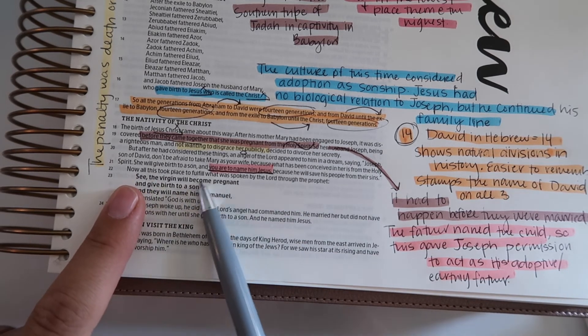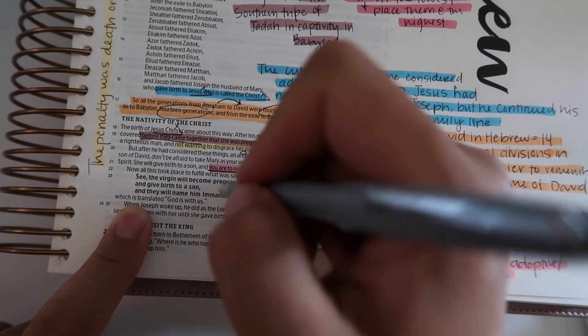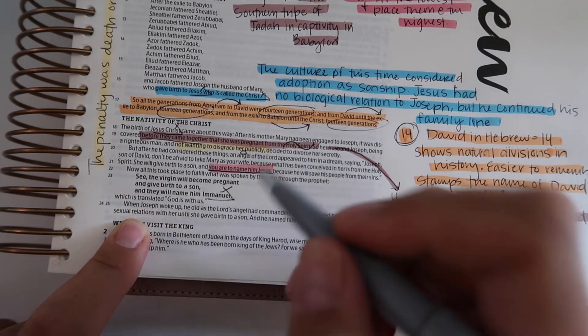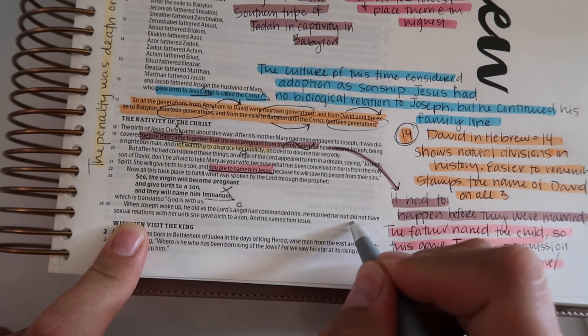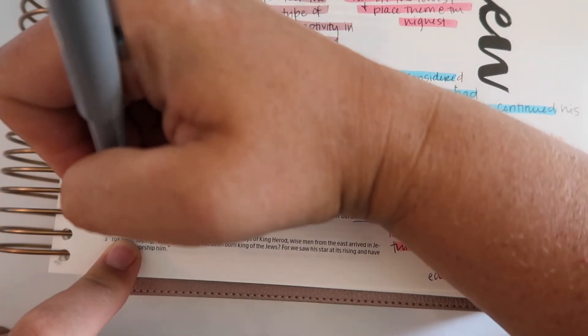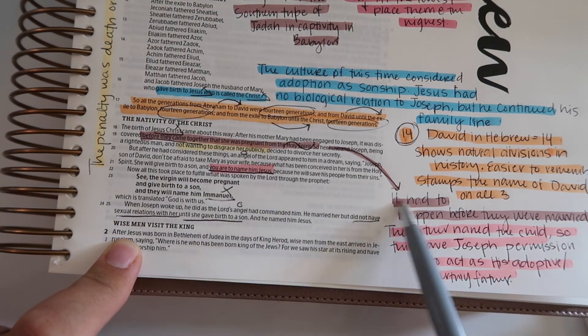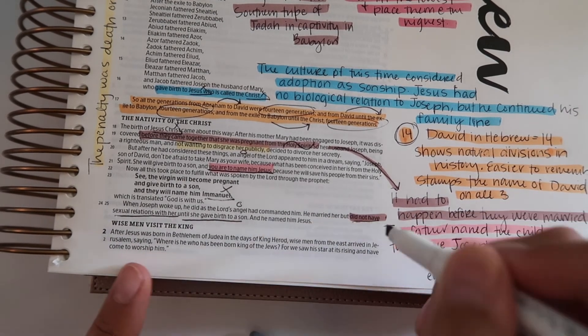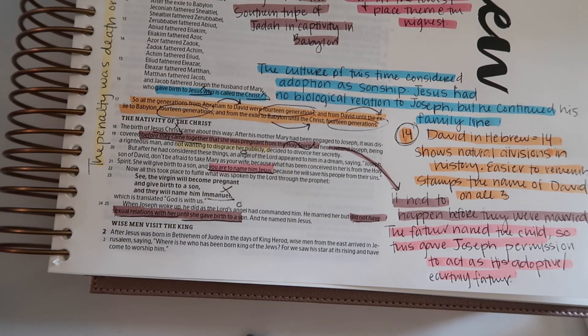Now all of this took place to fulfill what was spoken by the Lord through the prophet: the virgin will become pregnant and give birth to a son and they will name him Emmanuel, which means God with us. When Joseph woke up he did as the Lord's angel had commanded. He married her but did not have sexual relations with her until she gave birth to the son. This goes with this - it had to happen just like this because people would have thought that Joseph was the one that got her pregnant.